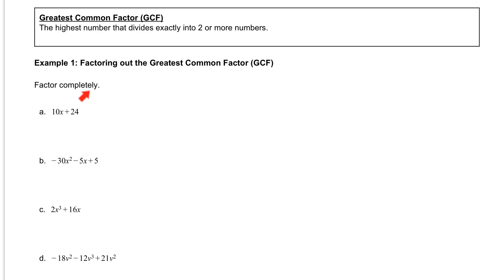Our directions say to factor completely, which means we have to get that biggest number, that biggest factor, out of our problem. So if we take a look at letter A, we have 10x plus 24. Our terms are broken down by the plus sign or the minus sign. So here 10x is one term, and 24 is your second term.